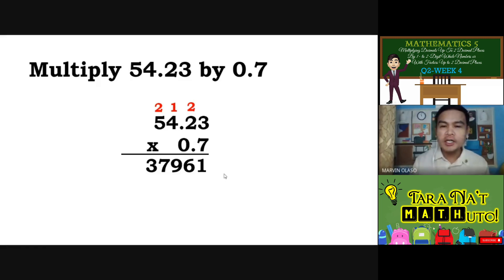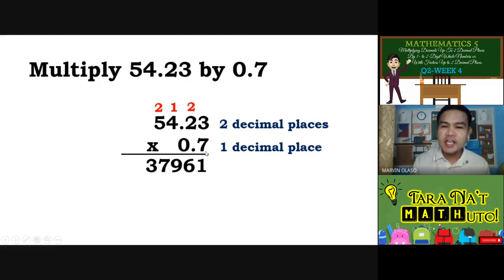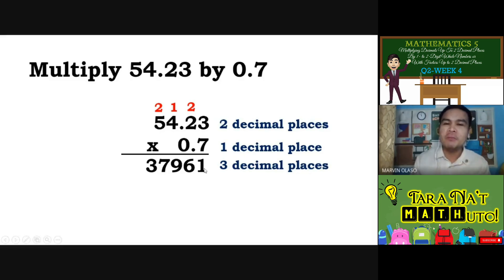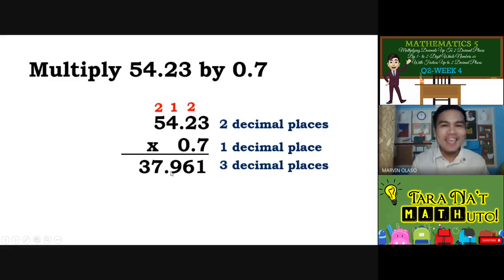But since we are talking about decimal numbers, how many decimal places do we have on the first factor? We have 2 decimal places. On the second factor, 1 decimal place. Total all the decimal places: 2 plus 1 equals 3 decimal places. Kung ilan lahat ang decimal places mo, dun mo ilalagay ang decimal point. So the final answer is 37 and 961 thousandths.